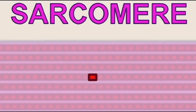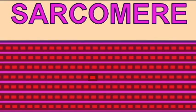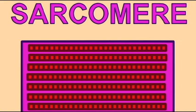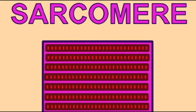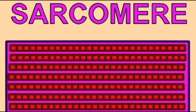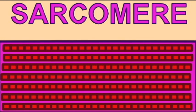When muscle cells contract, it is because their sarcomeres contract. If you understand the contraction of a sarcomere, then you can understand the contraction of the whole muscle, since myofibrils are made of sarcomeres and the muscle cell is made of myofibrils. The contraction of the sarcomere, explained by the sliding filament theory, explains how muscles contract.